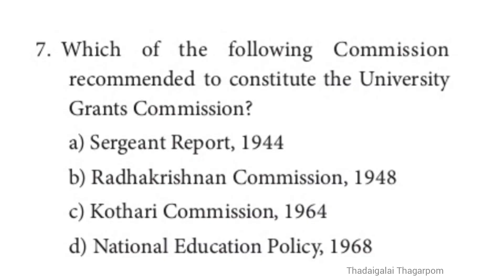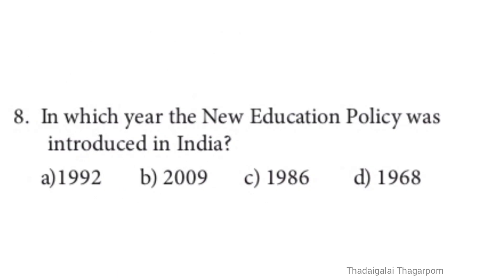Question 7: Which of the following commissions recommended to constitute the University Grants Commission? A. Sargent Report 1944, B. Radhakrishnan Commission 1948, C. Kothari Commission 1964, D. National Education Policy 1968. The correct answer is B, Radhakrishnan Commission 1948.